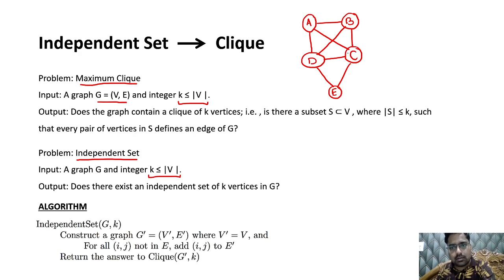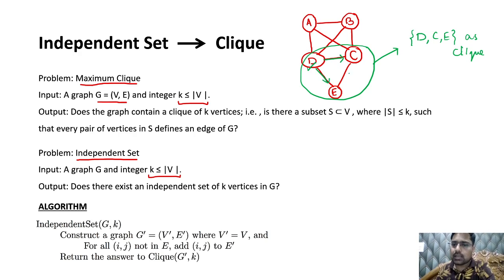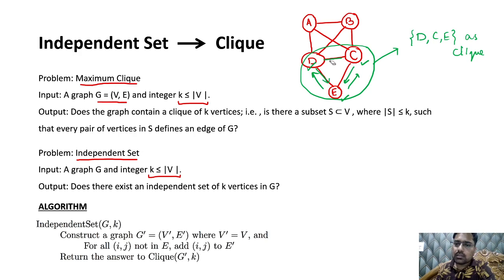The vertices you pick should connect to all other picked vertices. If I say I'm picking d, c, e as a clique — is that correct? Yes, because if I pick d I can connect to c and e; if I pick c I can connect to d and e; if I pick e I can connect to d and c. So {d, c, e} is a clique.